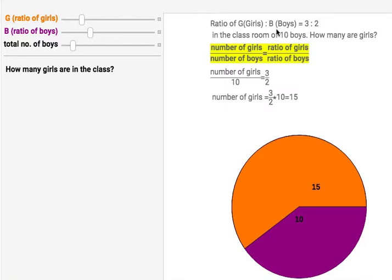It is given that the ratio of girls to boys equals 3 to 2 in a classroom of 10 boys. Note that the total number of boys is not given; 10 boys is just one of the components.